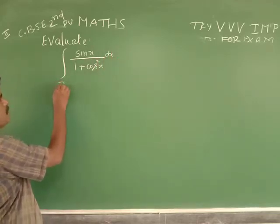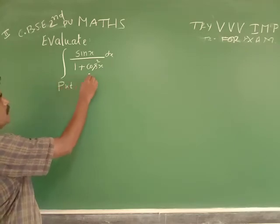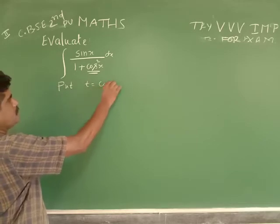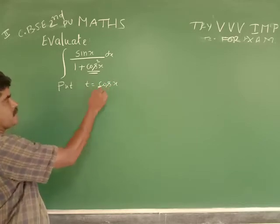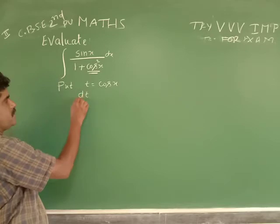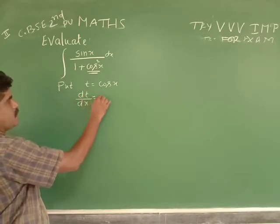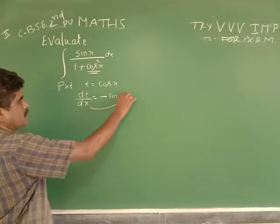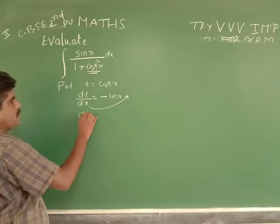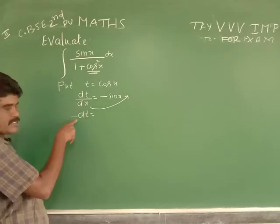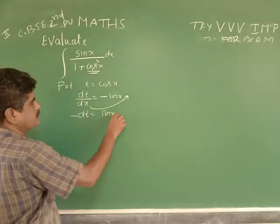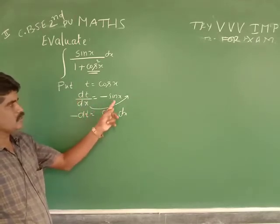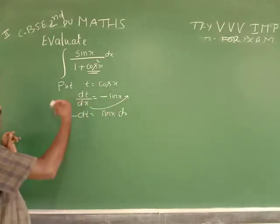Put t equal to cos(x). Since t is a function of x, differentiate with respect to x: dt/dx equals minus sin(x), so dx cross-multiplied gives dt equal to minus sin(x) dx. Therefore, minus dt is equal to sin(x) dx.